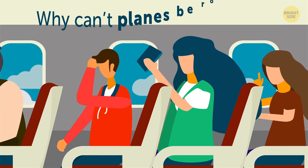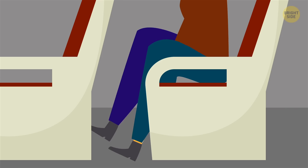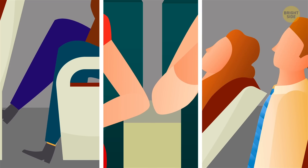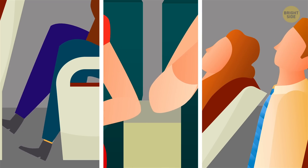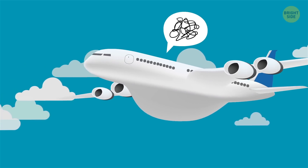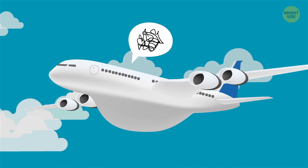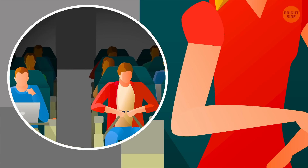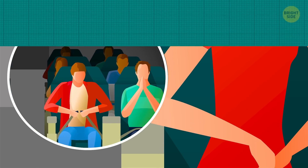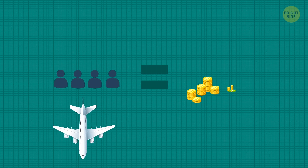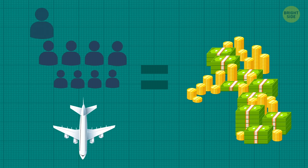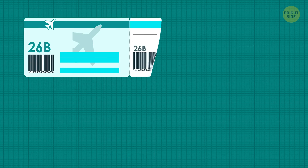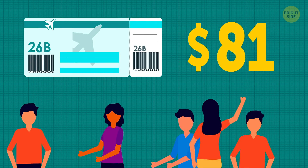Why can't planes be roomier? If you fly economy, you know what I'm talking about — pretty much zero legroom, you feel like you're in your neighbor's personal bubble if you put your arm on the armrest, and the person in front reclines their seat. The aisles are also Barbie-sized. It seems like they cram as many tiny seats in as they can, and that's exactly what they do. Like a lot of things, it all comes down to money. The more seats you can fit in means more passengers, more tickets sold, more money in the airline's pocket. Airlines say this keeps fares down since you're dividing costs like fuel, maintenance, and employee salaries among more people.